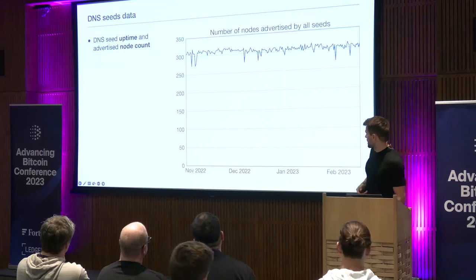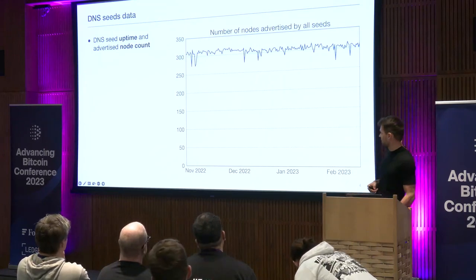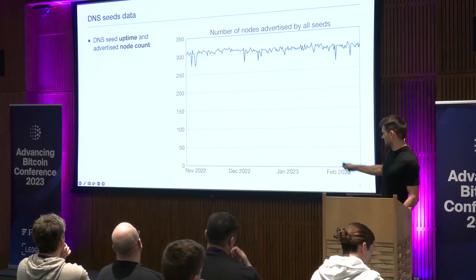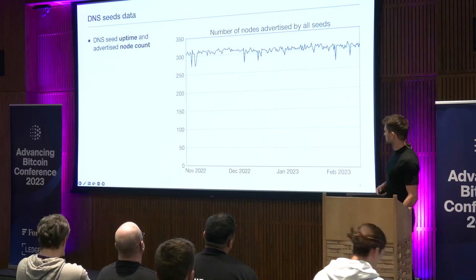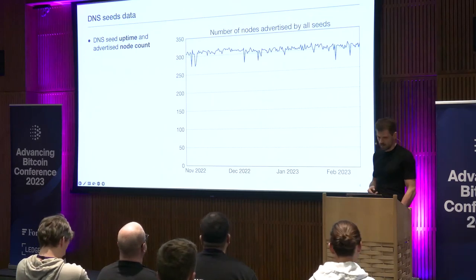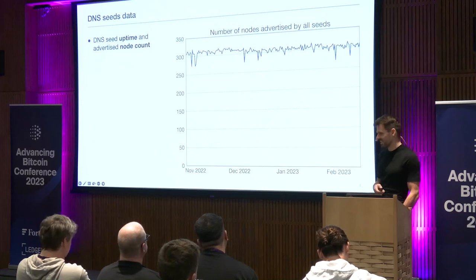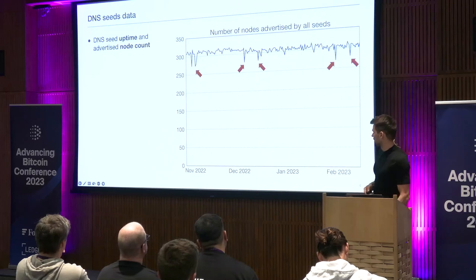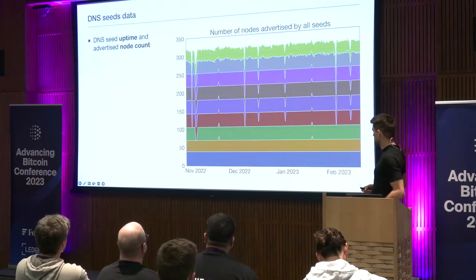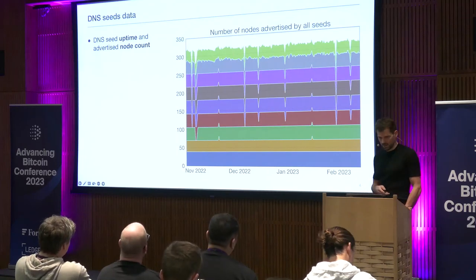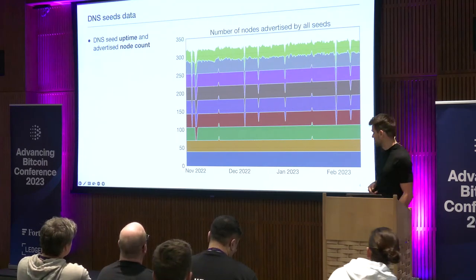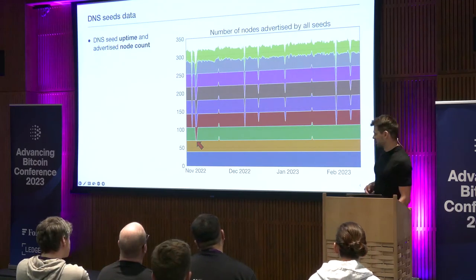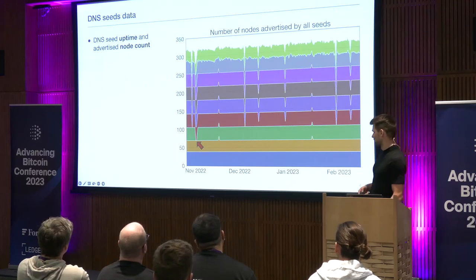Let's look at some actual data. You can see historical data for the number of nodes advertised by all of the seeds together over a time range of the last three months. There are around 300 nodes advertised by the seeds. You can see occasional dips, and to figure out what's going on you can break down the data by seed. Each of the nine colors represents one of the nine available DNS seeds. One of the dips was caused by the green DNS seed not delivering any nodes, which means it was probably down, and other times it was the red seed.